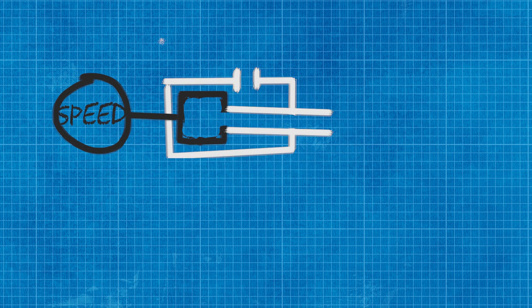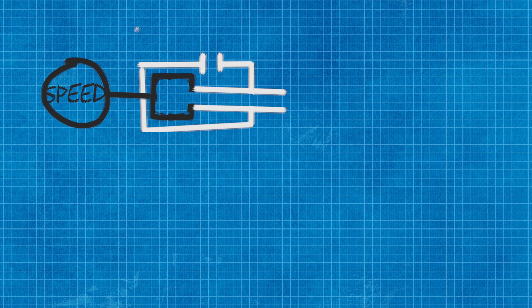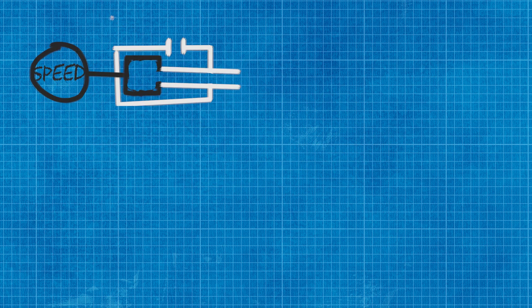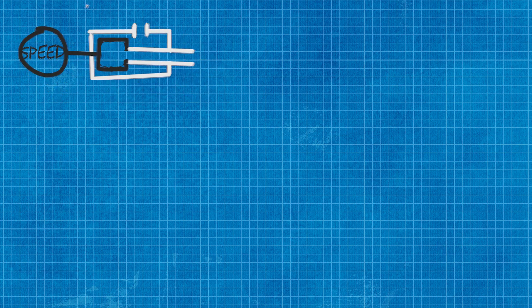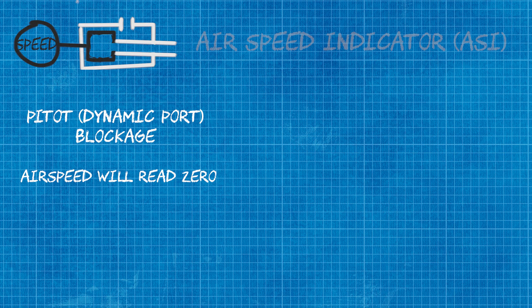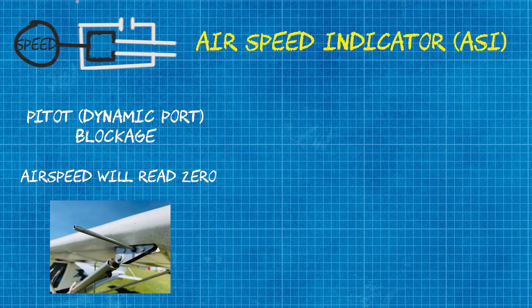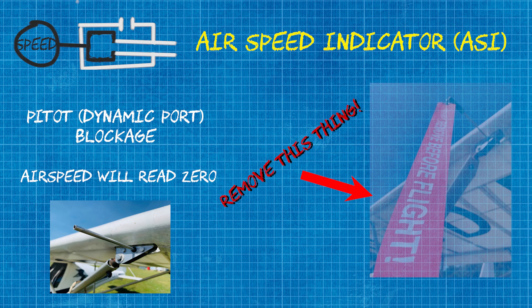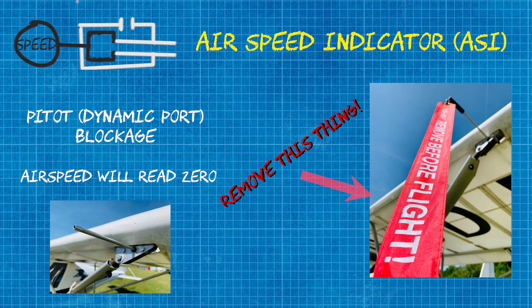If the pitot tube is blocked — in other words the dynamic pressure port is blocked — then we will simply not read any airspeed. It is really important that you check the pitot tube for any blockage such as small ants, bugs, or any dirt before we fly.